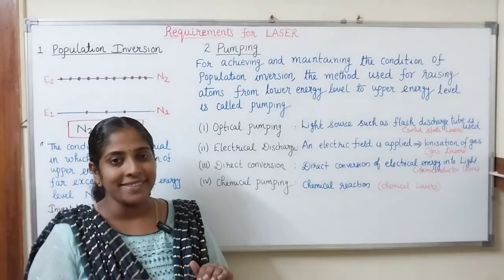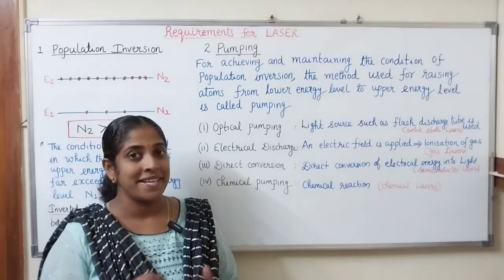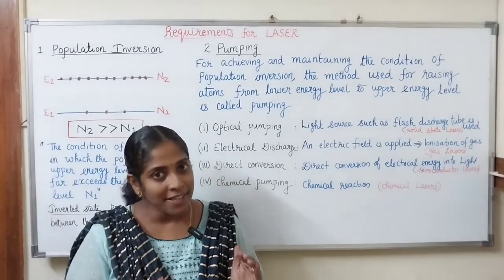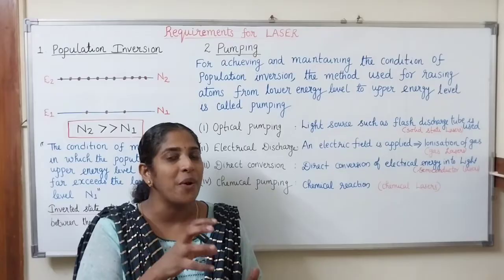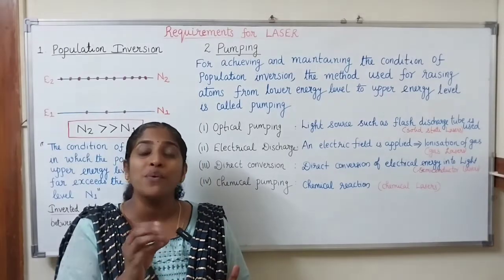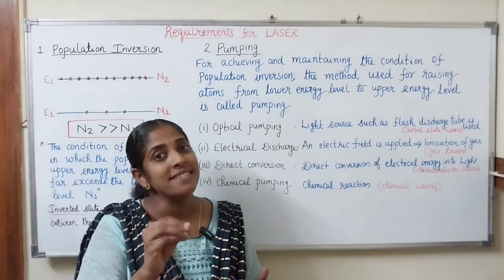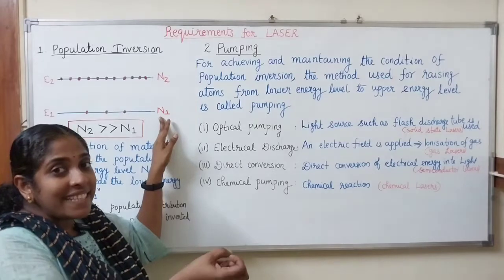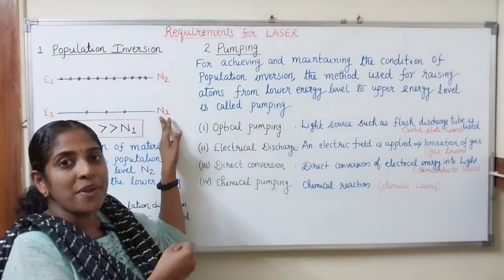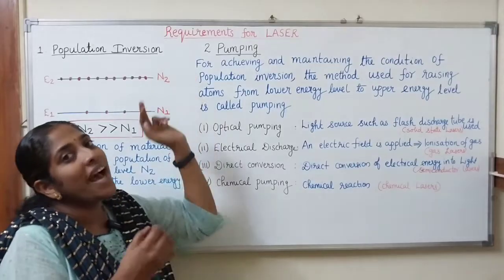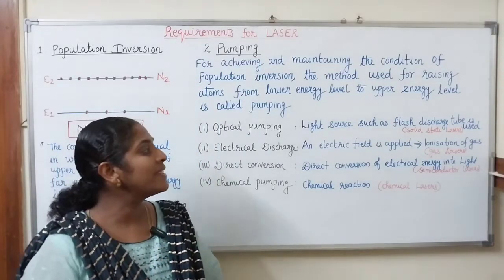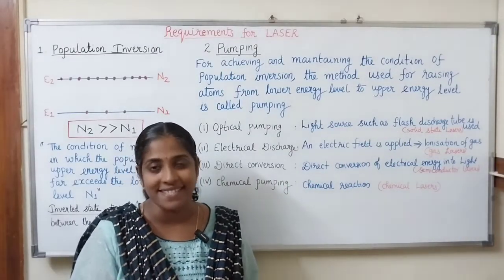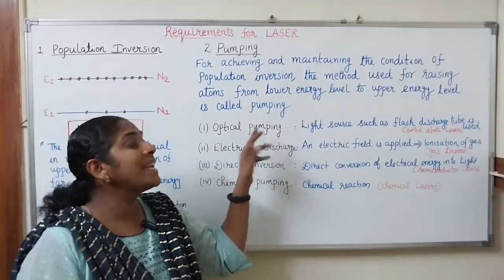In the optical pumping method, we use an optical source. A light source such as a flash discharge tube is used. From the light source, light flashes are incident on the system — that is, photons of suitable energy are incident on the system. The atoms in the lower energy levels absorb that energy from the photons and are excited to the higher energy level. This method is usually used in solid-state lasers such as neodymium-YAG lasers.